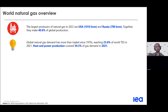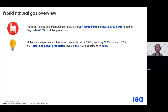For natural gas demand, it has also increased to match production, and now it is just under 25% of total energy supply (TES). It is also consumed in many different sectors that we'll be looking at later. It is a very flexible fuel and can be used in many different situations.